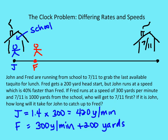John runs at a rate that's 40% faster than Fred. So I multiply 300 yards per minute times 1.4 and end up with 420 yards per minute. So 1.4 times 300 equals 420 yards per minute — that is John's speed, or his rate of travel. Fred runs at 300 yards per minute, but he already has a 200-yard head start.